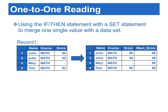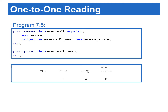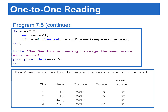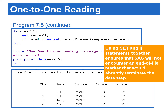A better use of one-to-one reading is in a situation when an if statement is used in conjunction with a set statement. For example, suppose we would like to create a mean score variable based on the mean value of the score variable. We can calculate the mean score first, then merge the calculated mean value with the original data. Program 7.5 starts with calculating the mean score by using proc means and storing the mean value in the record one mean data set. In the next step, we utilize one-to-one reading to merge record one with the mean values from the score variable. Using set and if statements together ensures that SAS will not encounter an end of file marker that would abruptly terminate the data step. Therefore, the single mean score can be associated with each observation in record one.